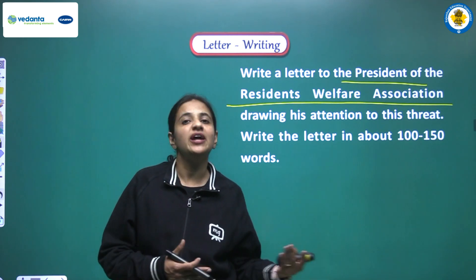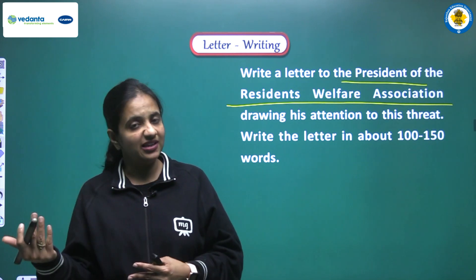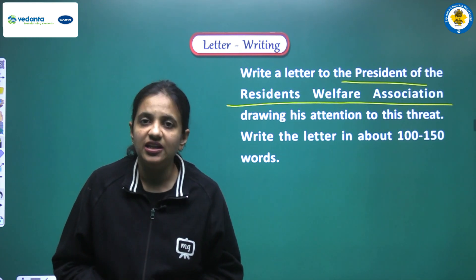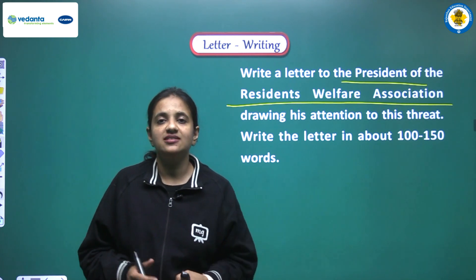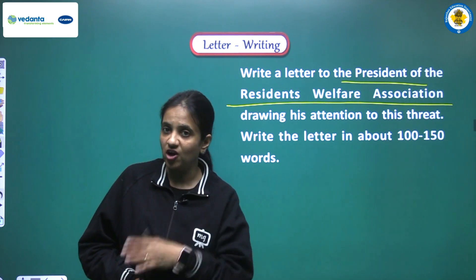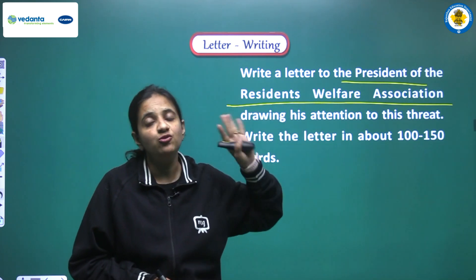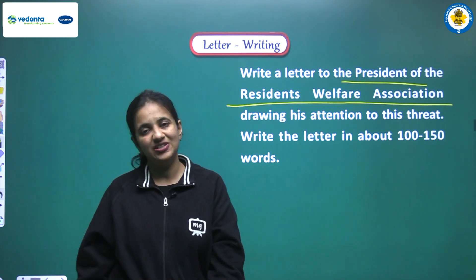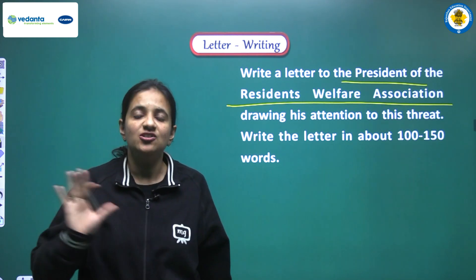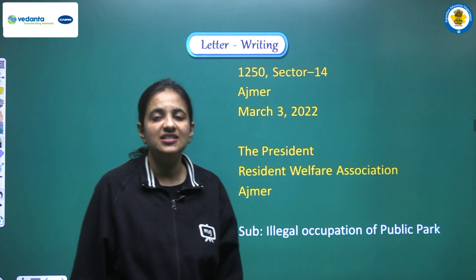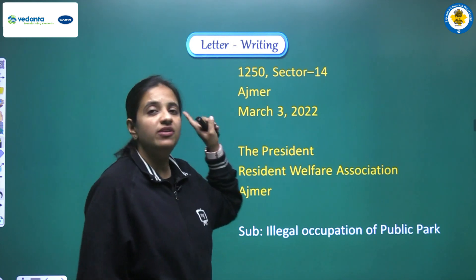To summarize the problem: there is a public park in front of our house and some people have set up illegal temporary houses there. These anti-social people are a security threat to the residents of the colony. We have to cover this problem and write to the president of the Resident Welfare Association, drawing his attention to it. This is also a formal letter because we are writing to an official authority.